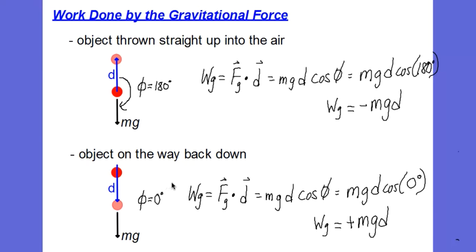And on the way back down, now the displacement vector and the weight point in the same direction. So the angle between them is zero. The cosine of zero is positive one. So the work done by gravity in that case is positive mgd.